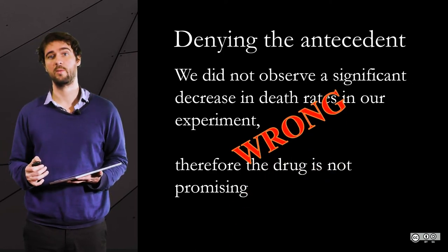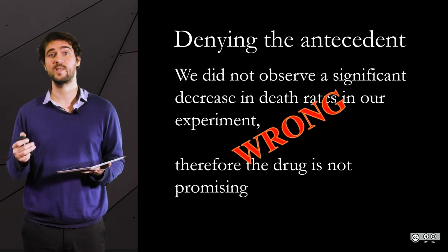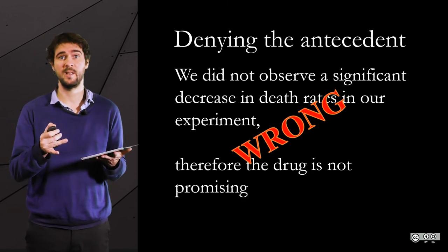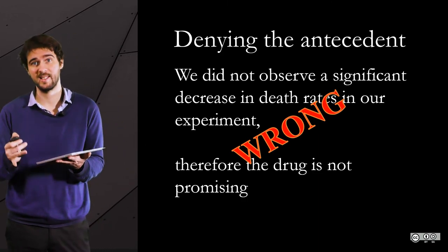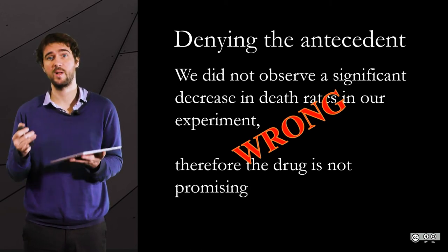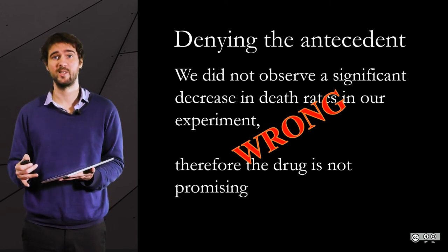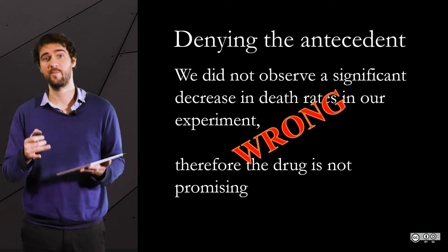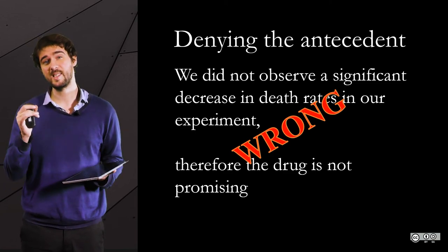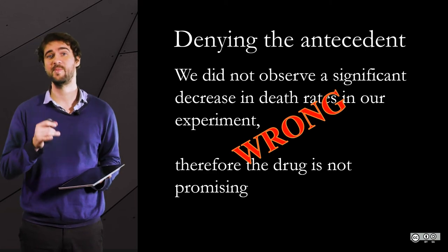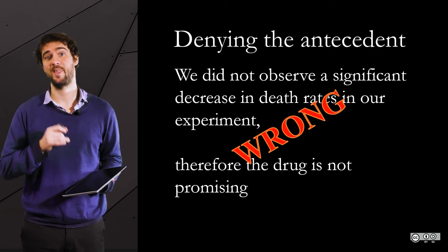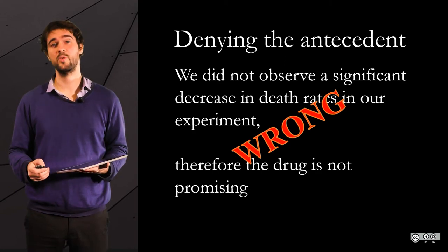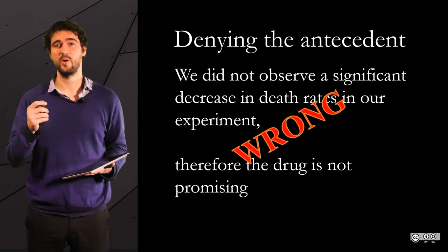...then you are utterly wrong. Why? Because it could very well be the case that the drug could have an effect, but you did not apply it in the right conditions, with the right people. Maybe you tested it on young people, but it is among people above 60 years old that it would have made the difference. With this simple mistake, you could be dismissing a drug that could have saved hundreds of thousands of lives. You have to do better than that — design new experiments.